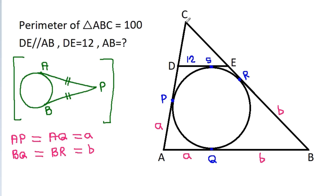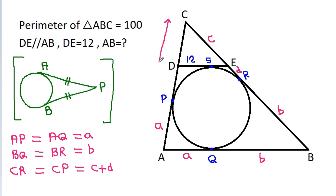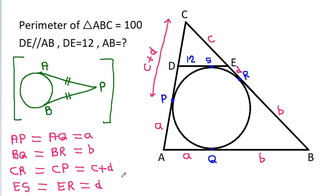And from point C, CR will be equal to CP. Suppose CE is 'c' and ER is 'd'. Then CR will be equal to c plus d, so CP will be equal to c plus d. And from point E, ES will be equal to ER, and ER is 'd', so ES is 'd'.